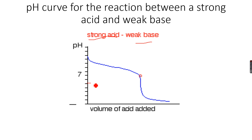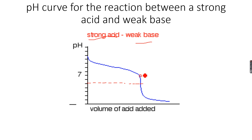At the equivalence point here, the pH is not seven — it is below seven. A pH below seven indicates acidic character. So in a strong acid and weak base titration, neutralization happens more towards the acidic side. This is because the strong acid dominates over the weak base, so the equivalence point falls below pH 7, closer to the acidic side.